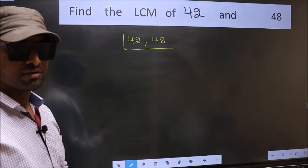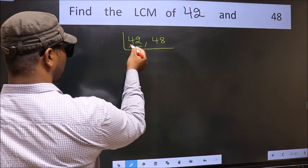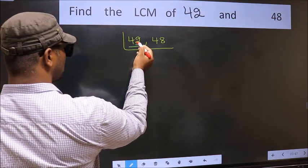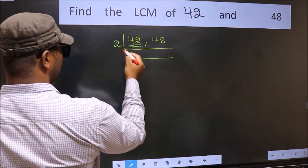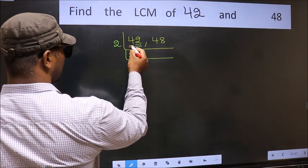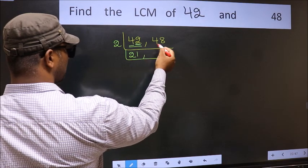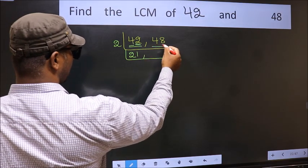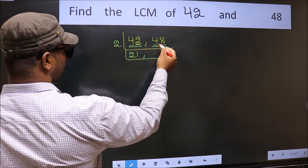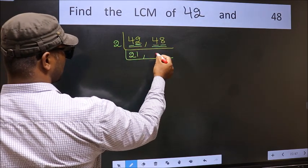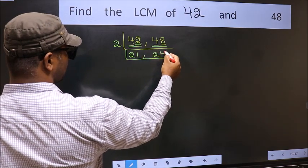Now focus on the first number, which is 42. The last digit is 2, so take 2. The first digit 4 — when do we get 4 in the 2 times table? 2 twos are 4. The other digit 2 — 1 two is 2. Now the other number, 48. Last digit 8, so this is also divisible by 2. First digit 4 — 2 twos are 4. The other digit 8 — 4 twos are 8.